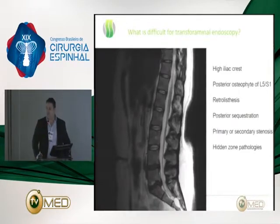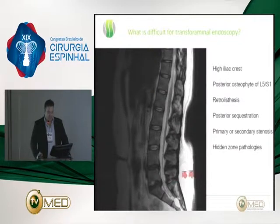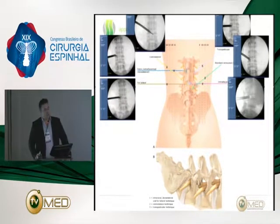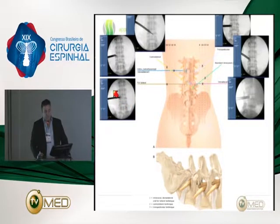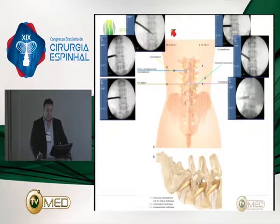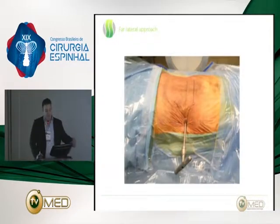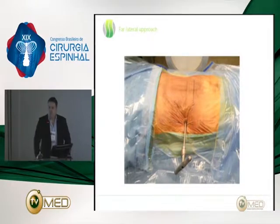What are the difficulties in transforaminal surgery? We heard about high iliac crest, spondylolisthesis, posterior disc herniation, primary and secondary stenosis — these might cause problems. Now, everybody's talking about the transforaminal approach, but when we talk about it, we actually have completely different approaches for different pathologies. The far lateral approach is completely different from the craniocaudal approach, and the pathology actually defines where you have to enter the spinal canal.